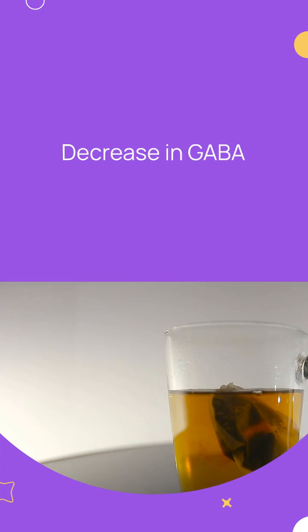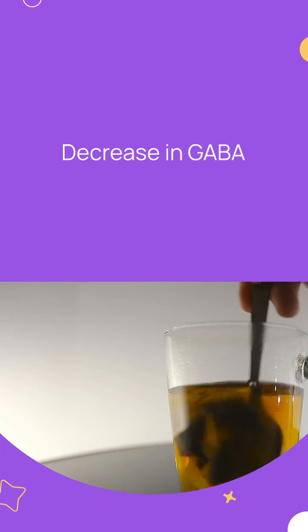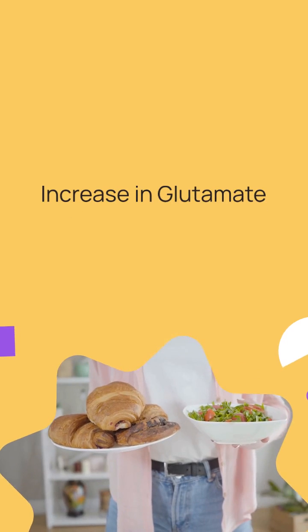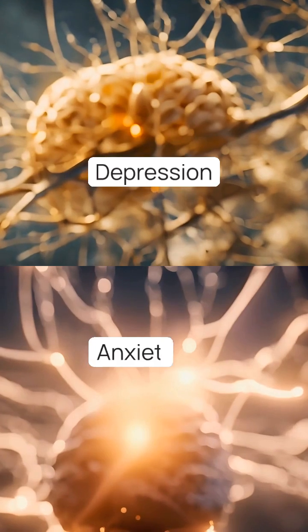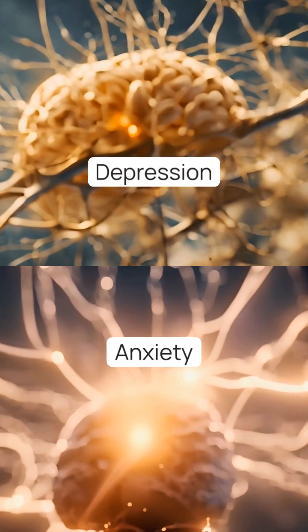Eating foods high in sugar and saturated fats can lead to a decrease in gamma-aminobutyric acid, or GABA, and an increase in glutamate levels. These neurotransmitters are the linchpins of brain function, and their imbalance is a known contributor to depression and anxiety. But it's not just about chemicals.